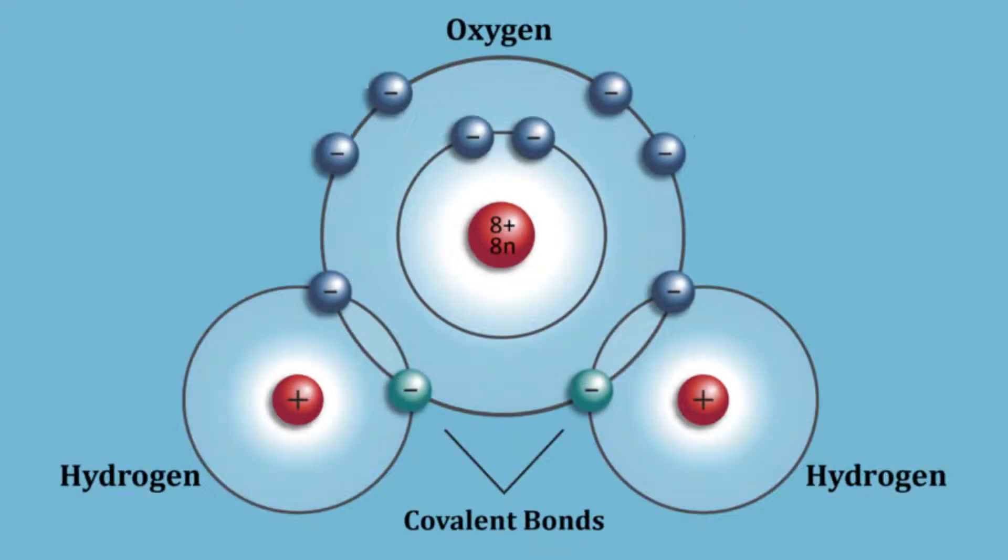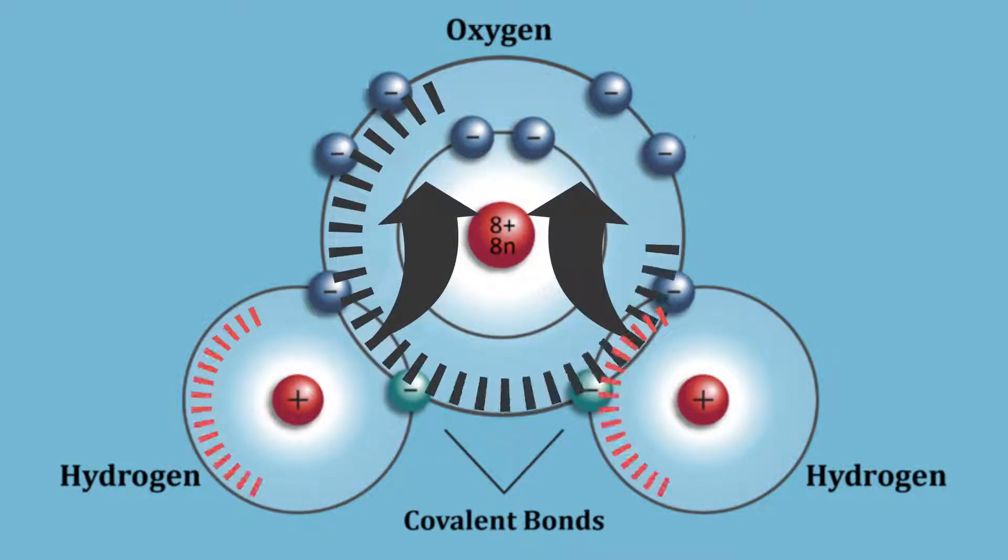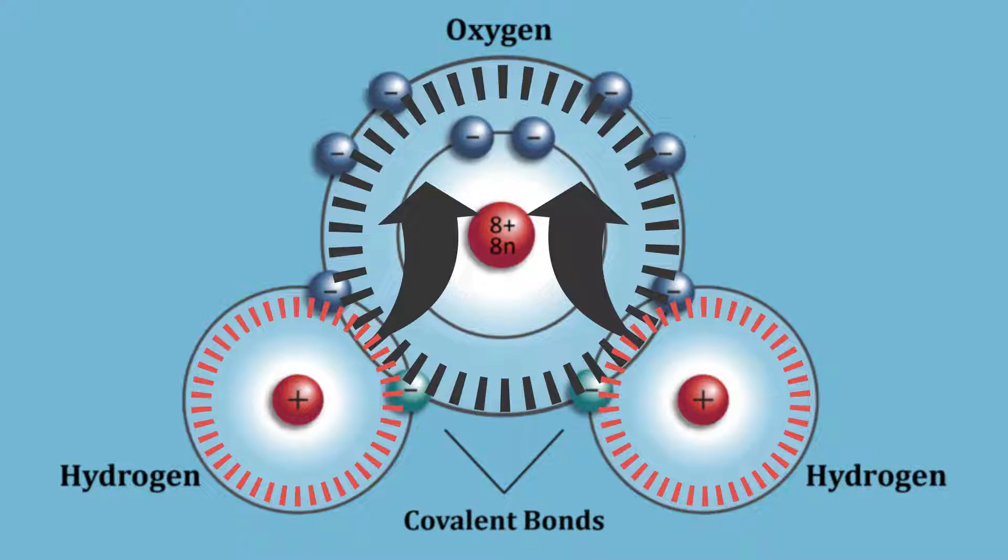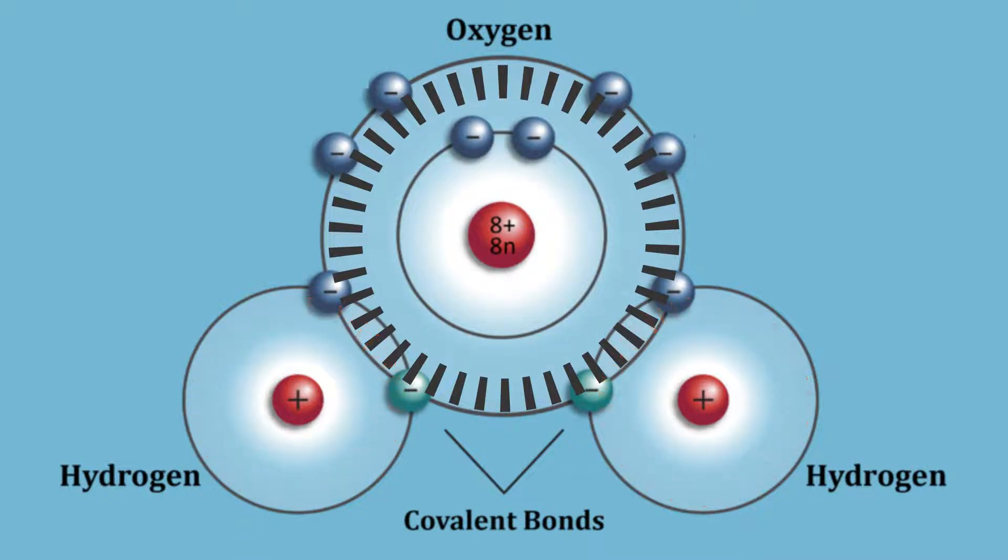The water molecule consists of two hydrogen atoms polar covalently bonded to an oxygen atom. Since oxygen is more electronegative than the hydrogens, oxygen pulls the shared electrons more closely to itself. This results in the electrons being shared unequally and gives the oxygen atom a slightly more negative charge than either of the hydrogen atoms, which end up being slightly positive in charge.